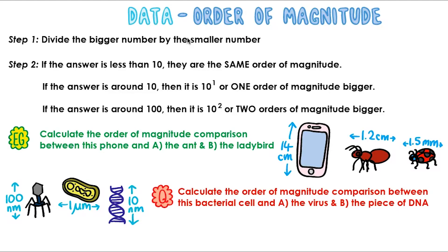Orders of magnitude are used to make approximate comparisons between numbers or objects. Here's how they work. The first step is to divide the bigger number by the smaller number. If the answer is less than 10, then they're the same order of magnitude — they're around the same size. But if the answer is around 10 itself, then it's 10 to the 1, or 1 order of magnitude bigger.